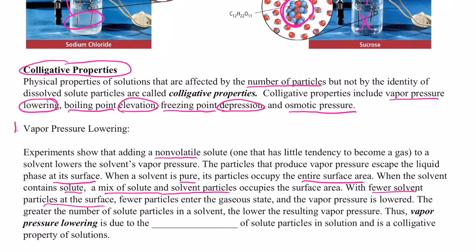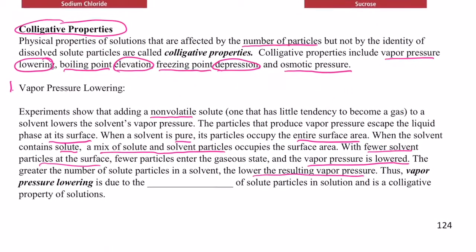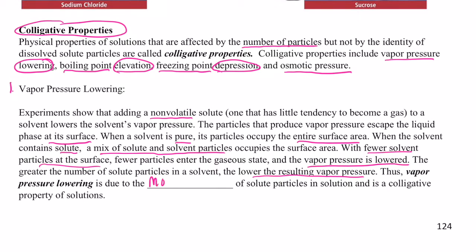Fewer particles can enter the gaseous phase, and if fewer particles are entering the gaseous phase, the vapor pressure will be lower. The greater the number of solute particles in the solvent, the lower the resulting vapor pressure. Vapor pressure lowering is due to the mole fraction of solute particles in a solution and is considered to be a colligative property — it depends upon the number of solute particles, not the type.